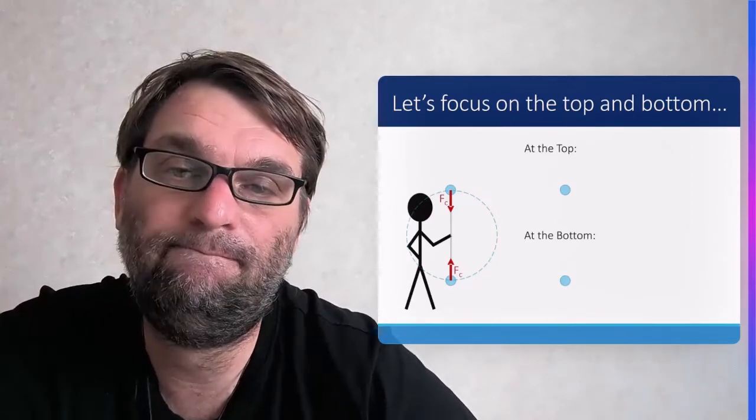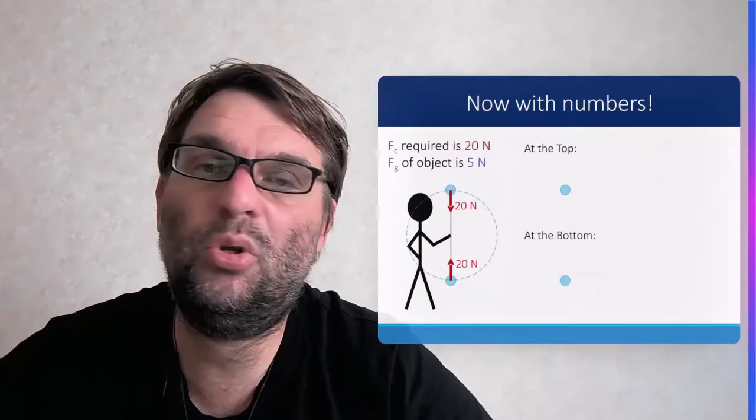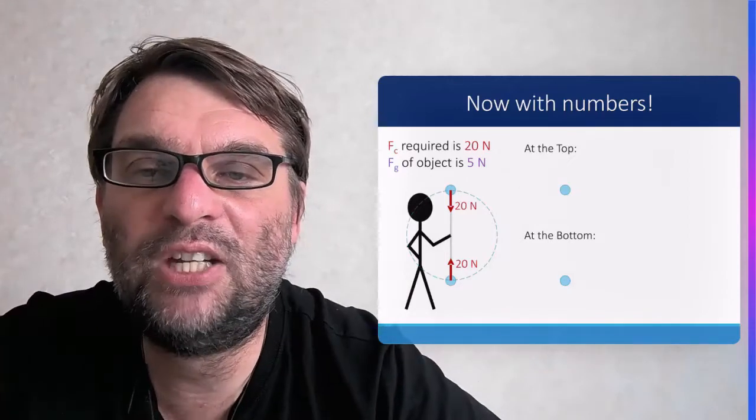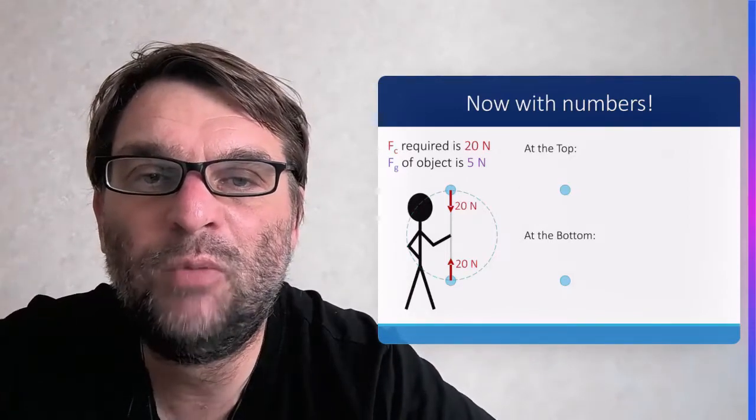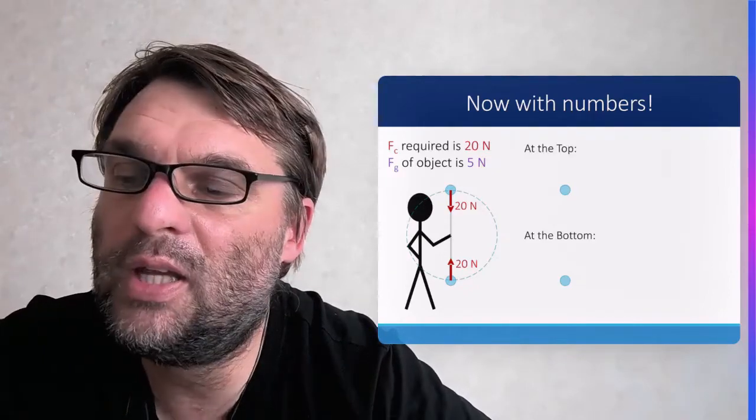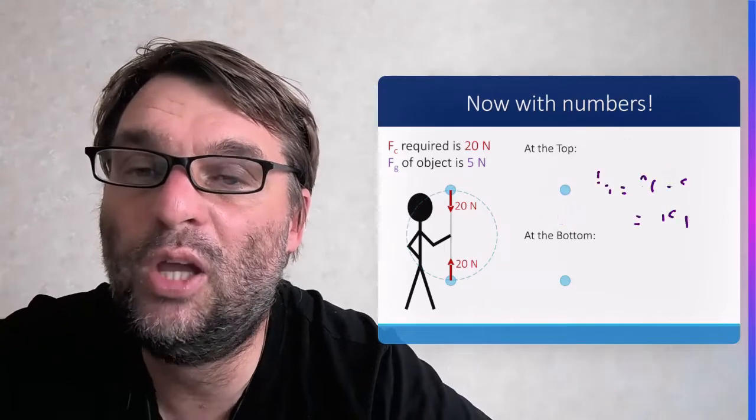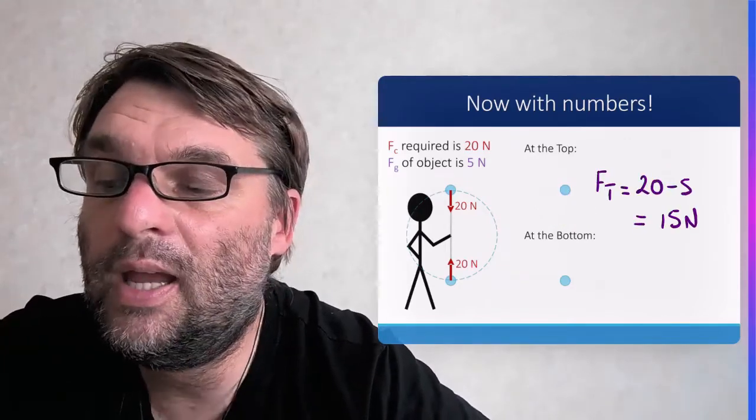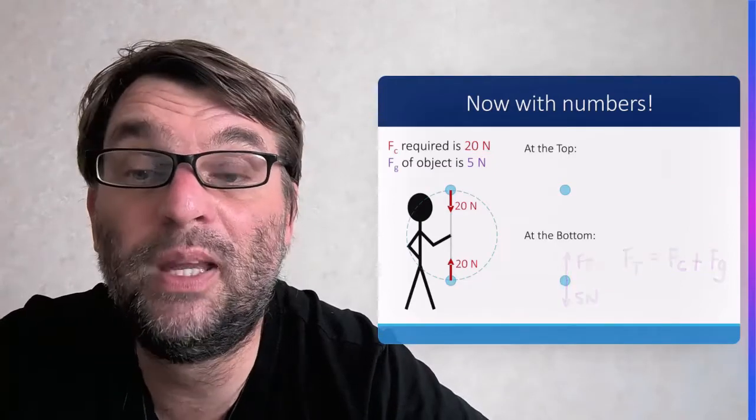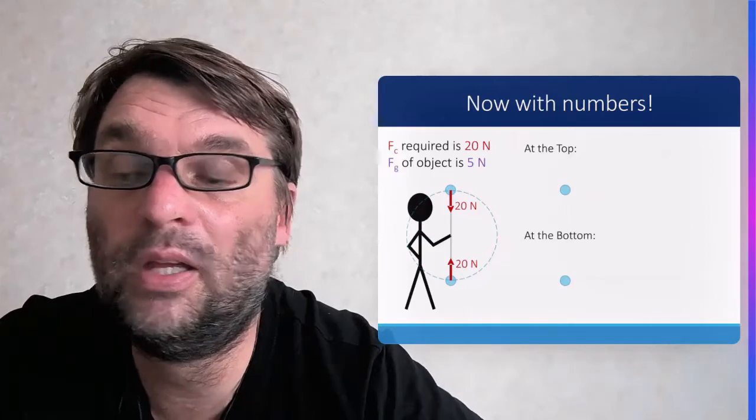If we add some numbers: if the centripetal force is 20 Newtons and the force of gravity is 5 Newtons, then at the top the tension force will be 15 Newtons. At the bottom, the tension force will be 25 Newtons, 10 Newtons greater than at the top.